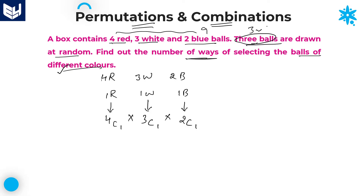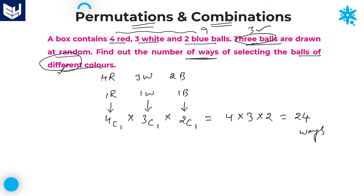Since our task is to select three balls, we multiply all the values: C(4,1) × C(3,1) × C(2,1) = 4 × 3 × 2 = 24. Total 24 ways are there in which all three balls are of different colors. That is the required answer for this question.